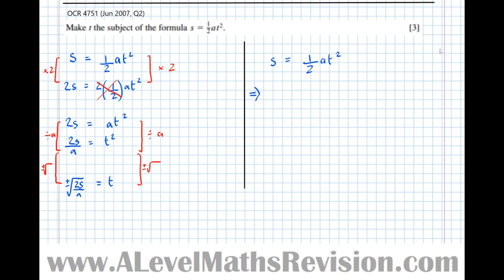So S equals a half A T squared. If I times both sides by 2, that leads to the direct consequence that 2S equals AT². That sign 'implies that' means leads to the direct consequence. Now I've got T squared times by A. I'm going to unpeel that layer, unwrap that A from the T squared. It's attached by multiplication, so if I divide by A, that implies that 2S over A. I divided by A to peel off that A from the T squared, to just leave T².